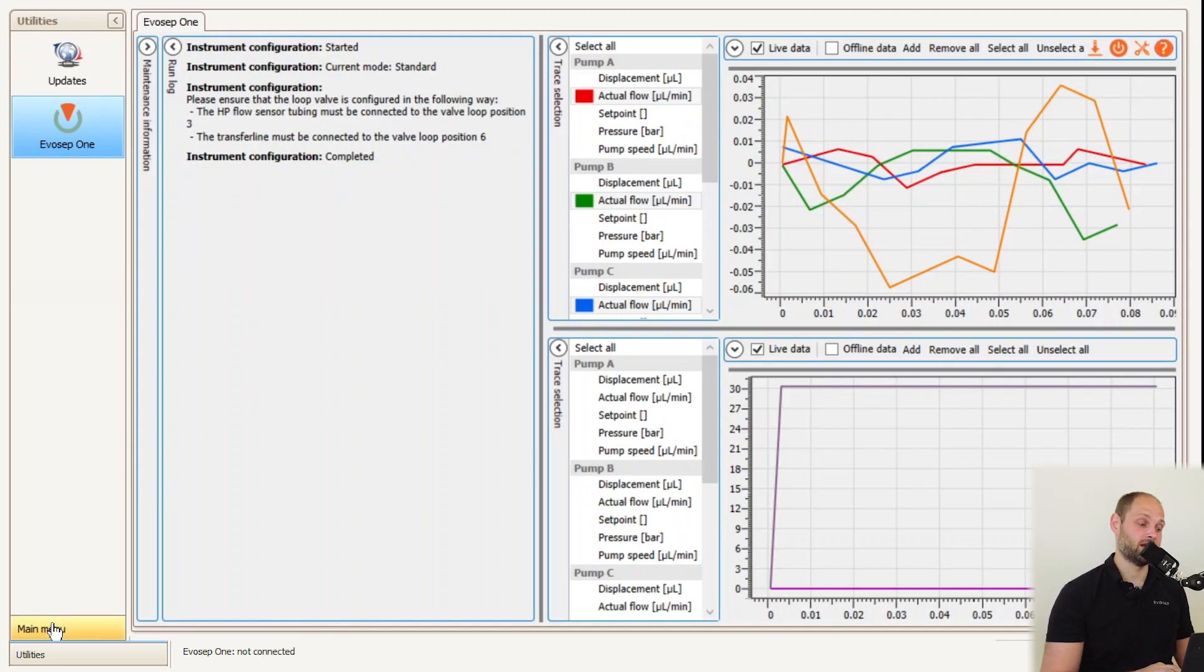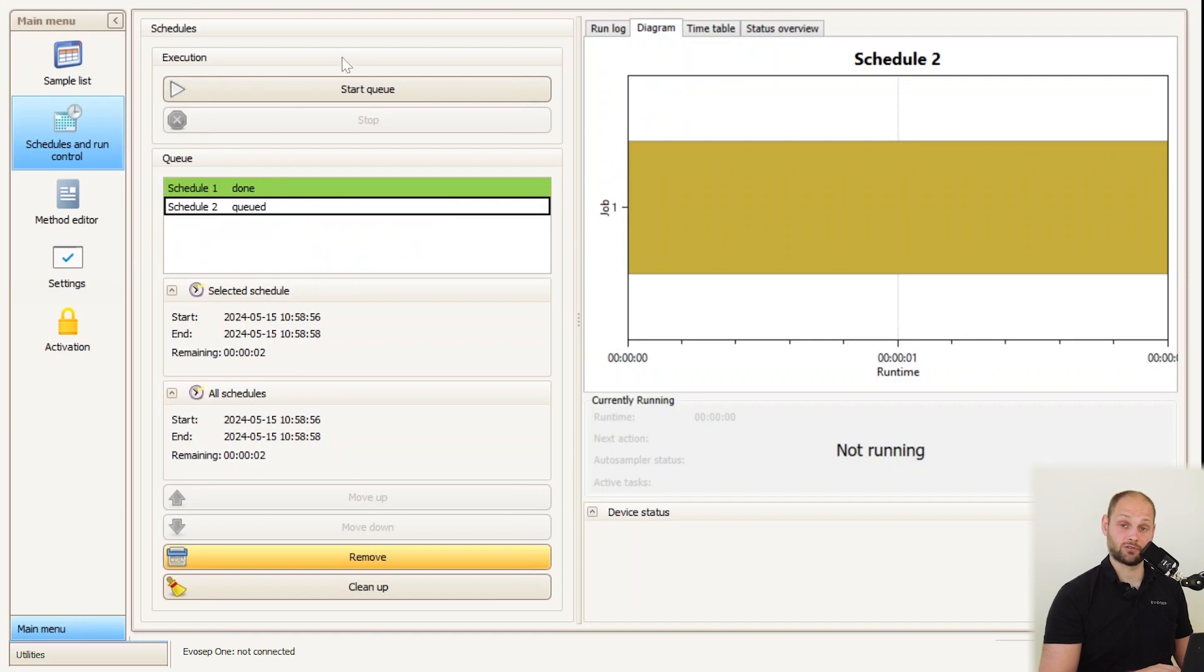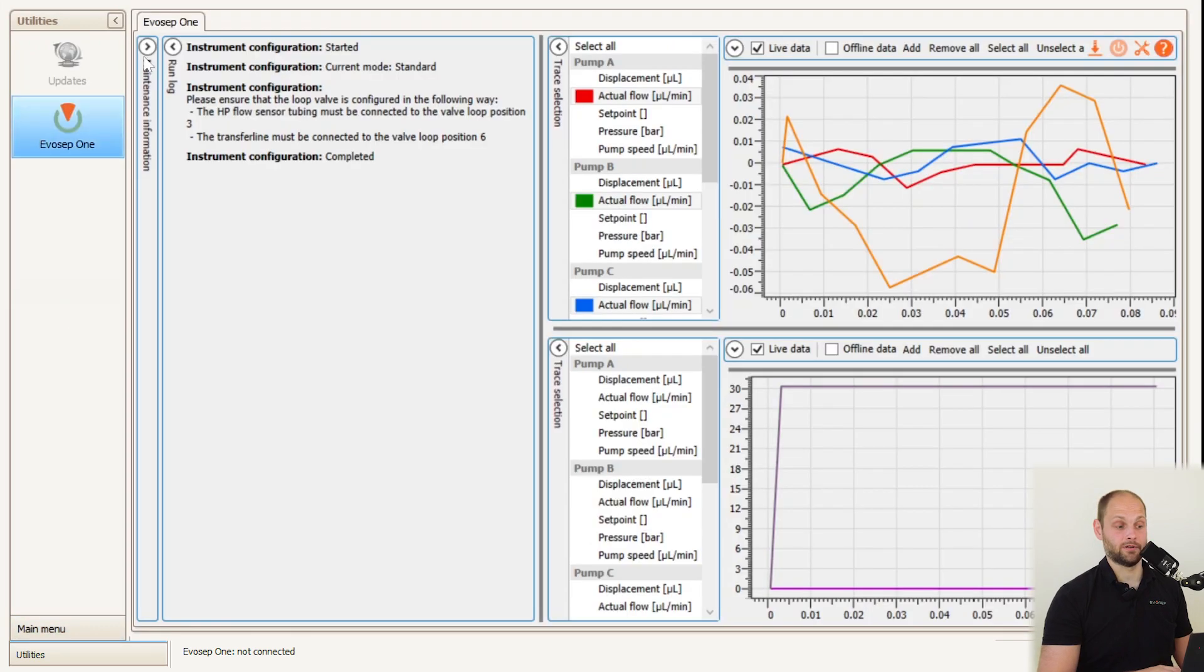To do this, we navigate back to the sample list and our instrument configuration menu, but instead of selecting show current, we navigate to set to zoom. Here we'll create it again, navigate back to the run control menu, run the new method, and then back to the graph viewer.